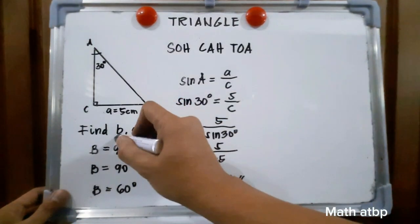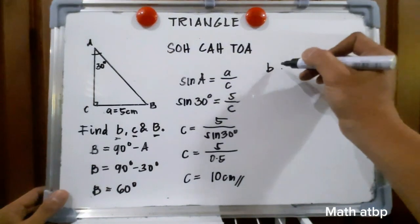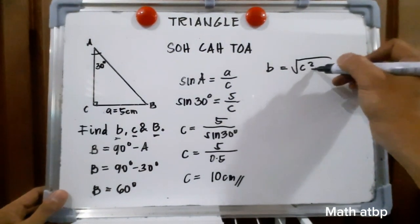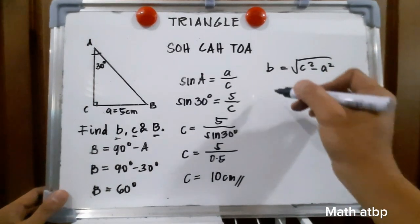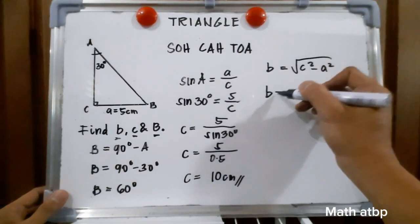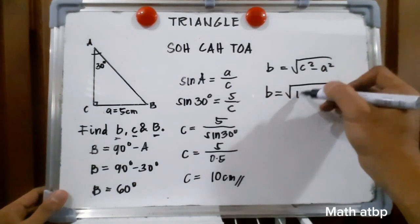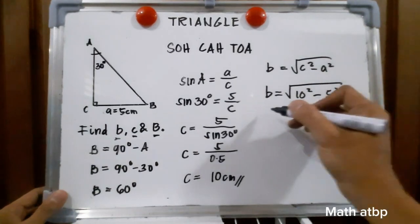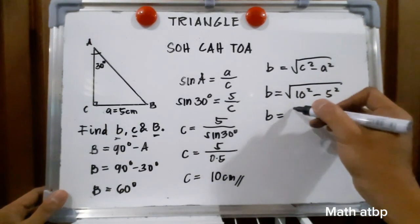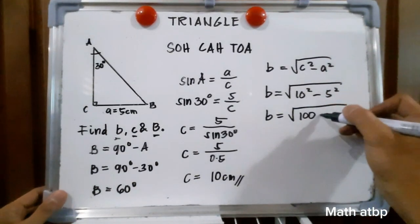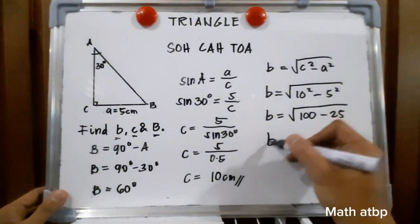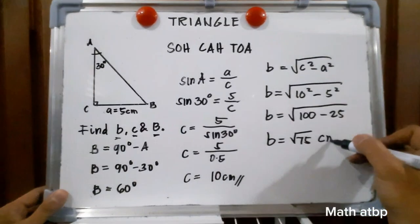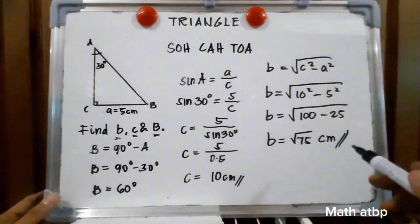Next, let us find side B. Side B is equal to the square root of C squared minus A squared. B is equal to the square root of 10 squared minus 5 squared, which is the square root of 100 minus 25. B is equal to the square root of 75 centimeters. That is side B.